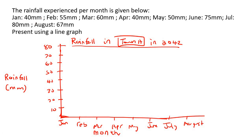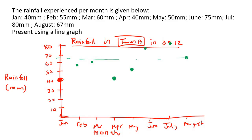In January, the rainfall is 40, so we just put a dot there. In February, 55 — February, 55. I'm not drawing any bars or anything like that; this is a line graph. In March, 60. April is 40. May, 50. June, 75 — up there. July, 80. And then August, 67 — about there. Now, because it's a line graph, you just connect a line — there, then there, then there, then there, there, there, and there. So that is what a line graph would look like.